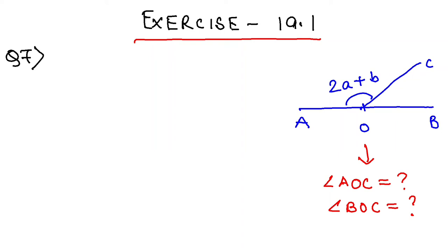Hello students, let us deal with question number 7 from exercise 19.1. The figure given to you in blue shows AB is a straight line, O is a point on AB, and OC is another straight line. Angle AOC is 2a plus b. What you need to find, shown in red, are angle AOC and angle BOC.